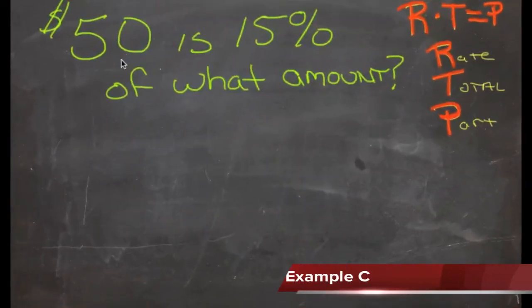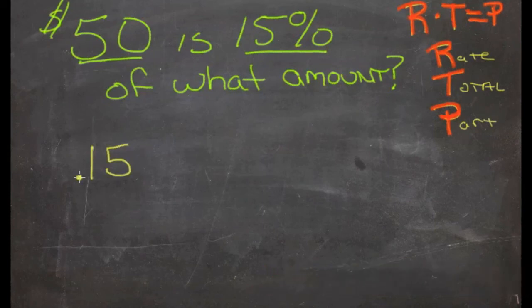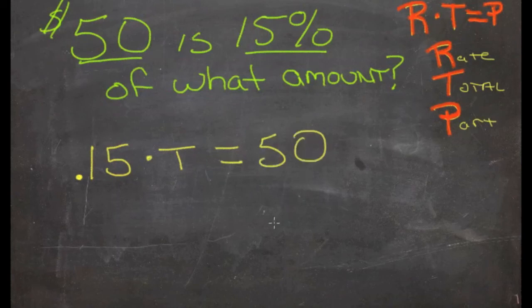Example C: $50 is 15% of what amount? Here we have the part, $50, and the rate, 15%. What we don't have is the total. We need to solve for total. Substituting our values, we have the rate 15%, written as 0.15, times the total we don't know, equals the part we have, 50.